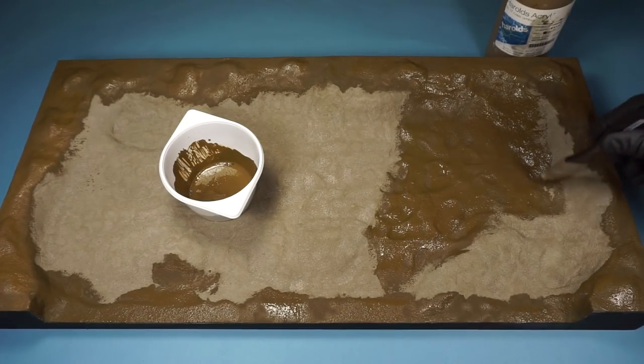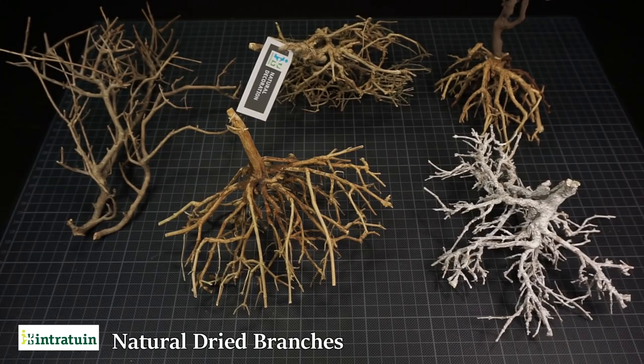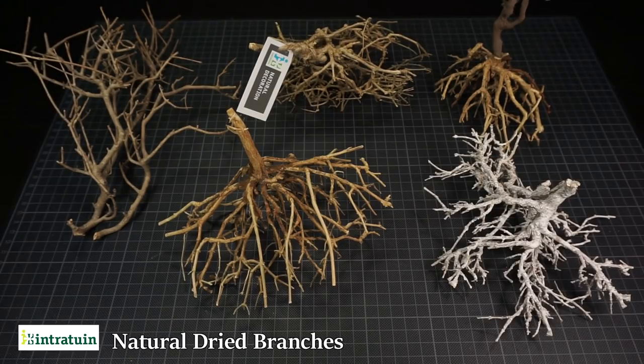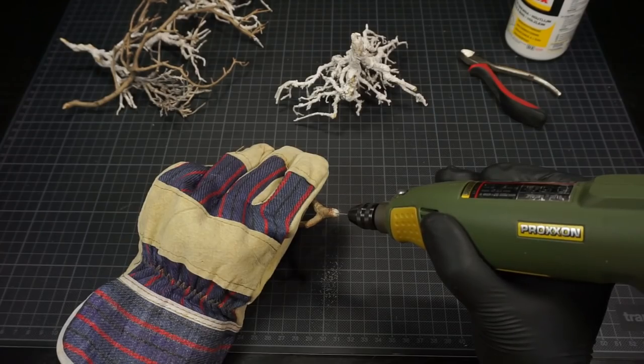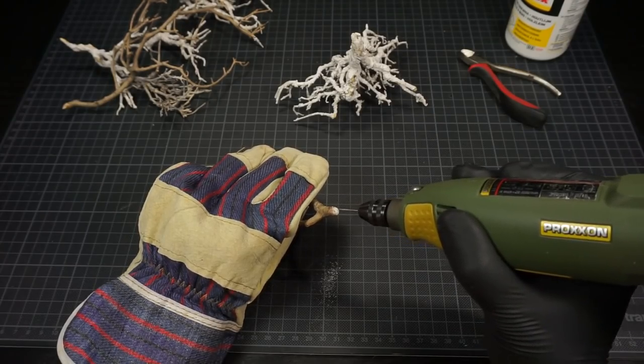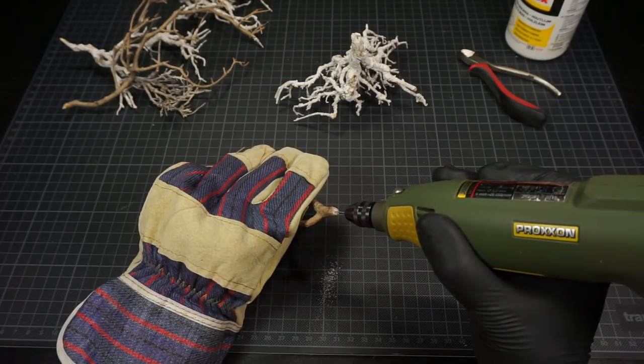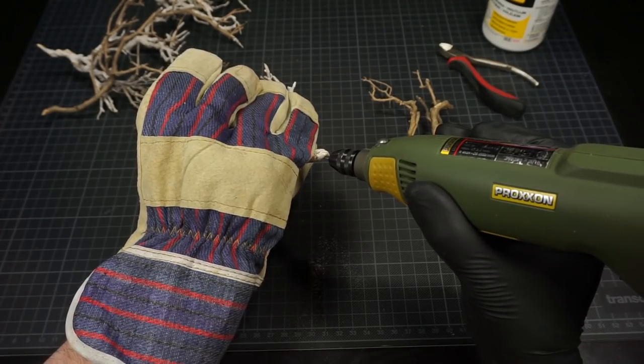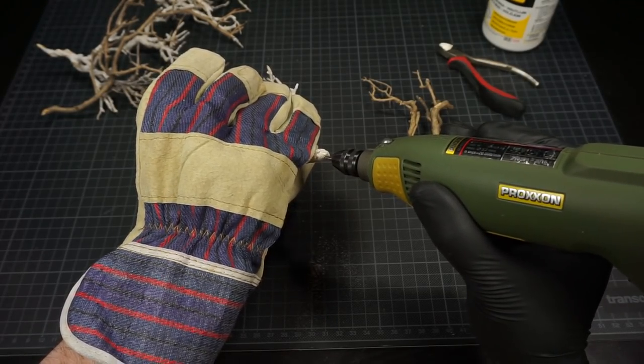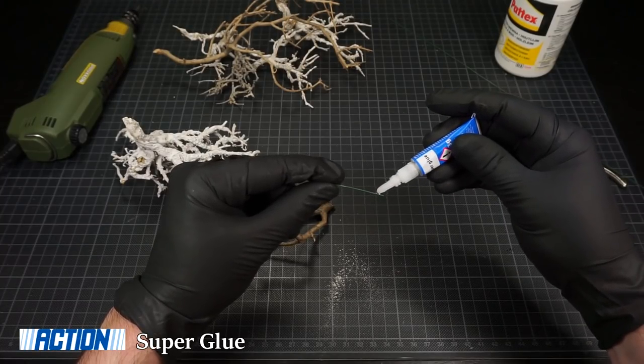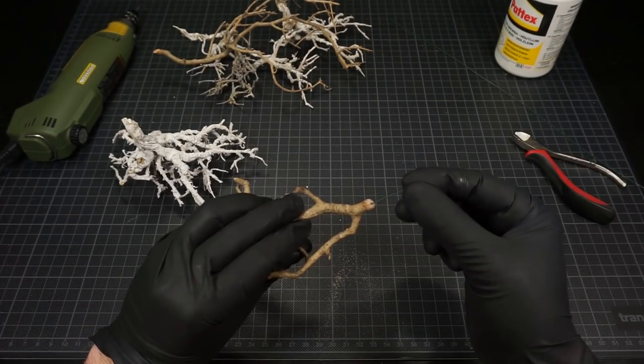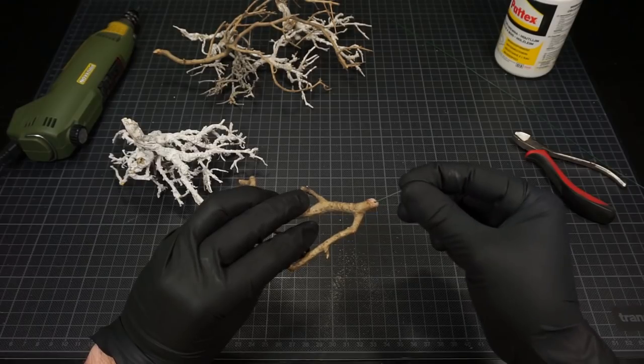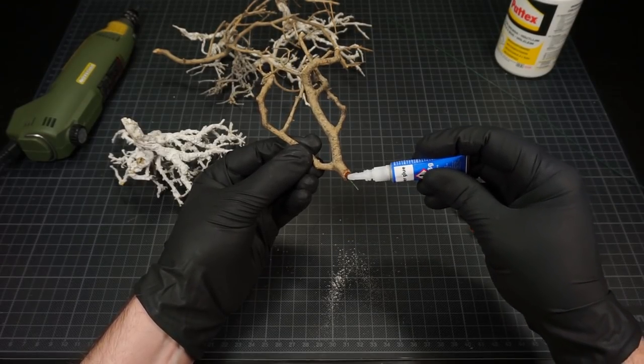With the first steps of the base completed I then start making the mangrove trees. I'll be using some of these natural branches to begin with. Using some florist wire and paper clips I attach the branches onto each other. As the adhesive I've used some super glue.